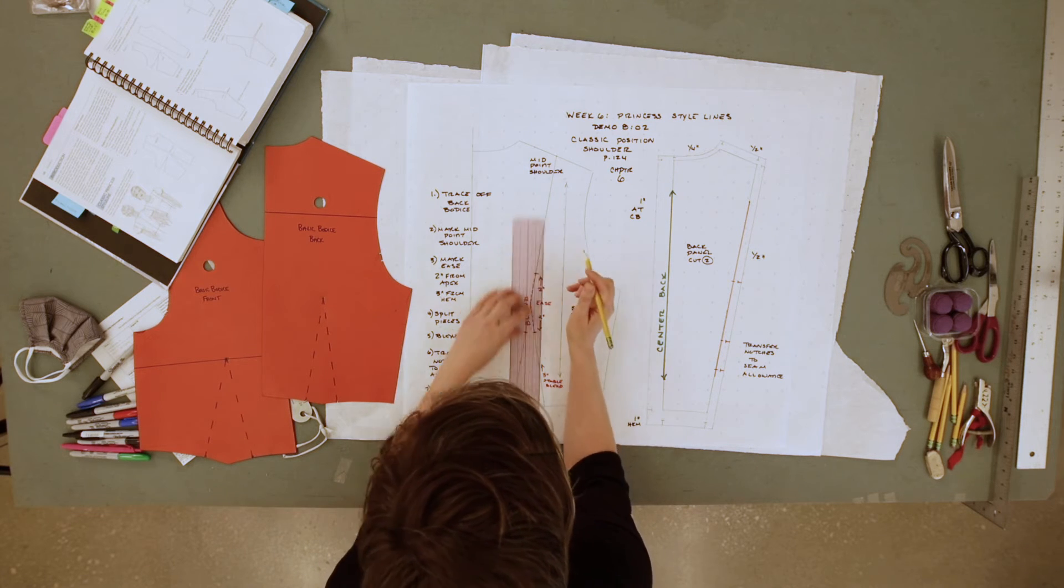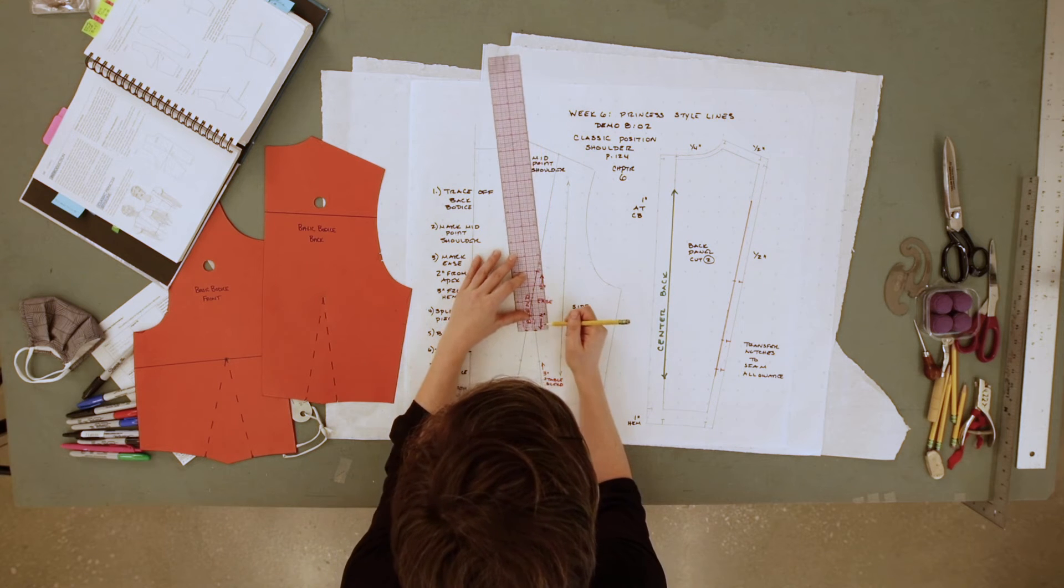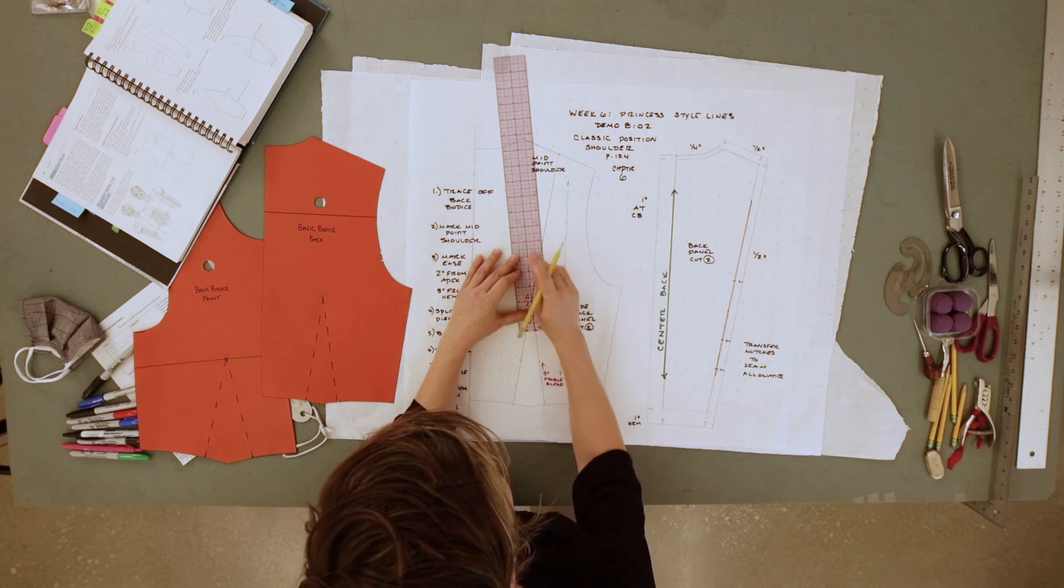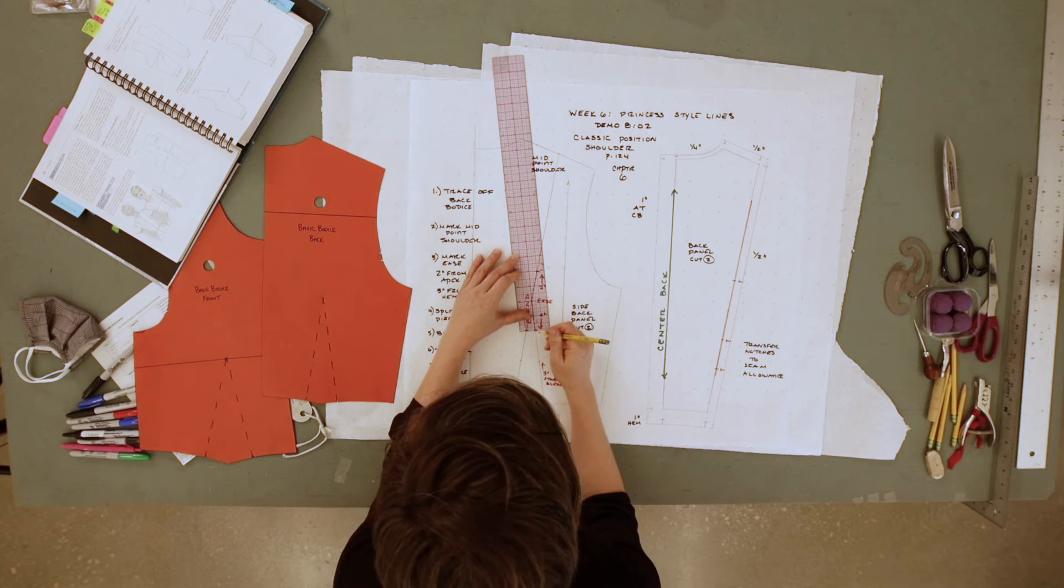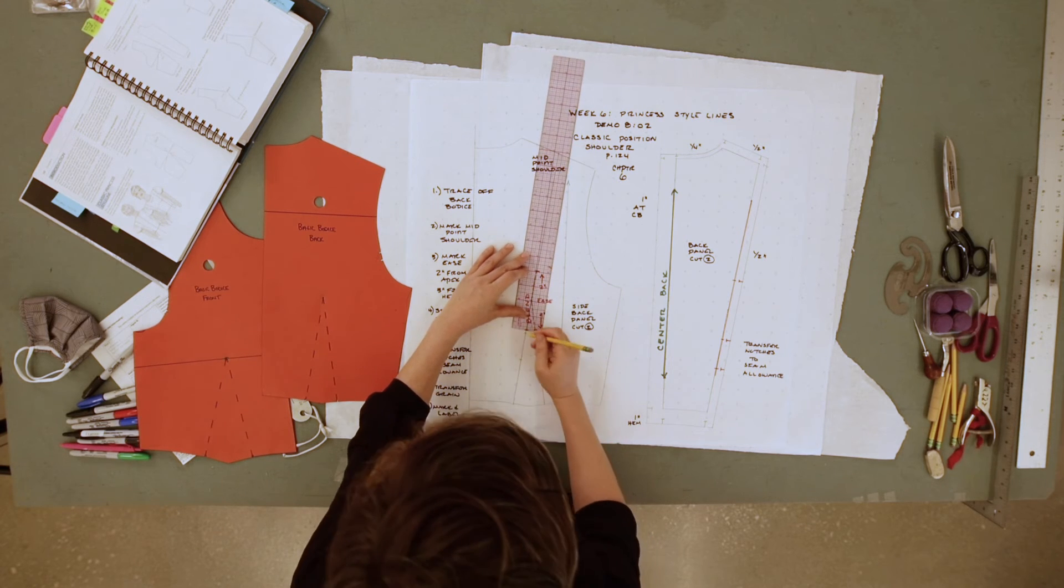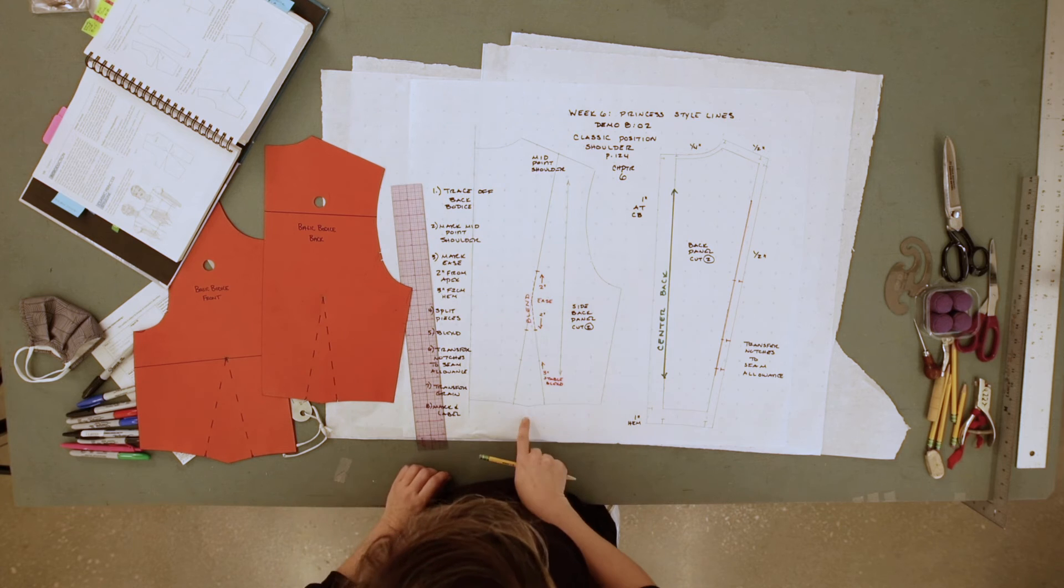Above and below, so on each dart leg. Aligning the center of your graph ruler with each dart leg, you're going to mark two inches down from that true apex.